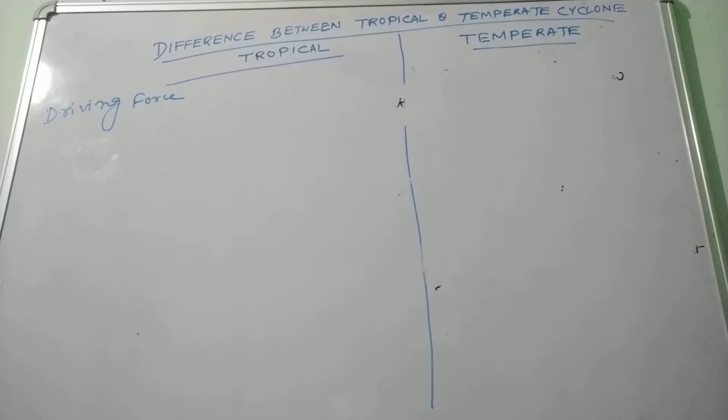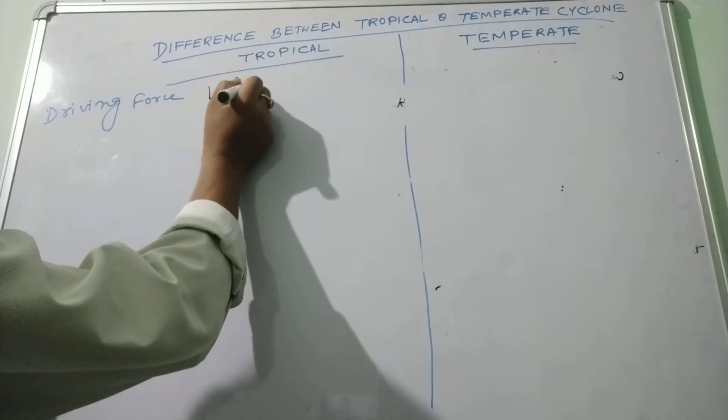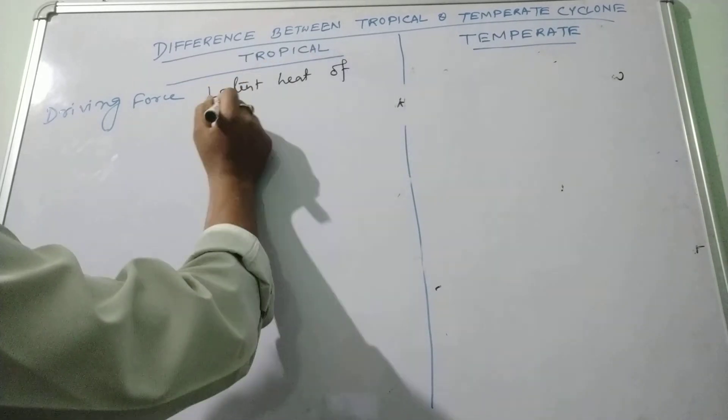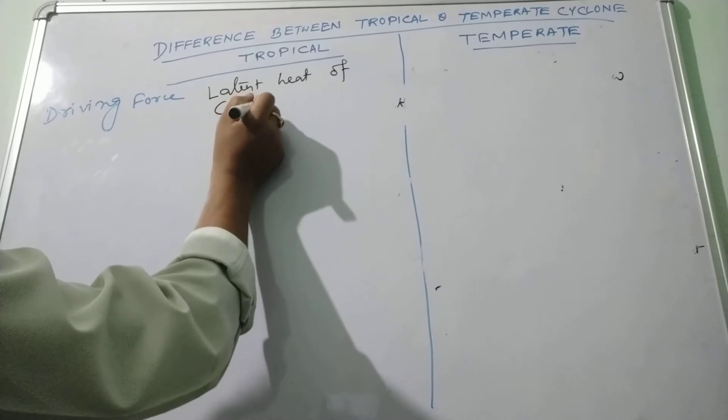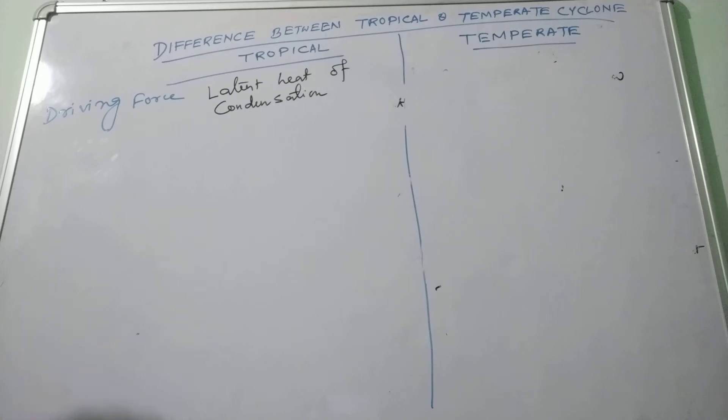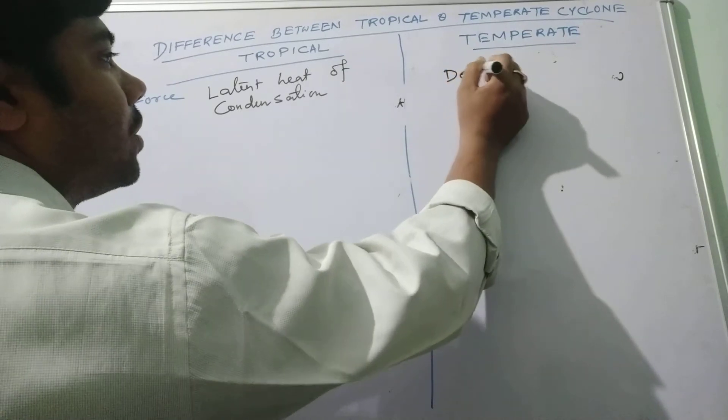Driving force. Tropical cyclone derives its energy from the latent heat of condensation, and temperate cyclone depends on the density of air mass.